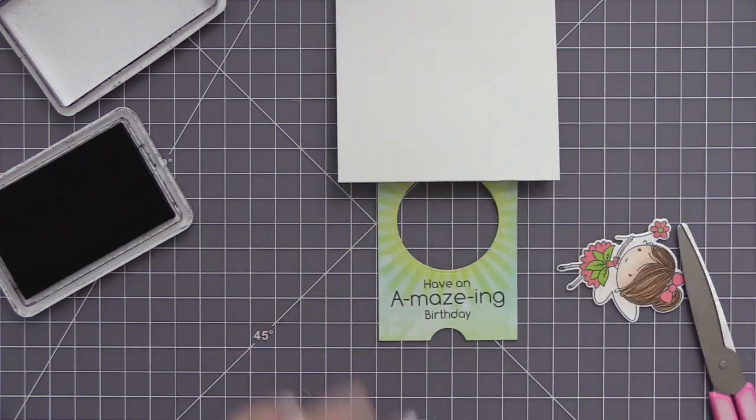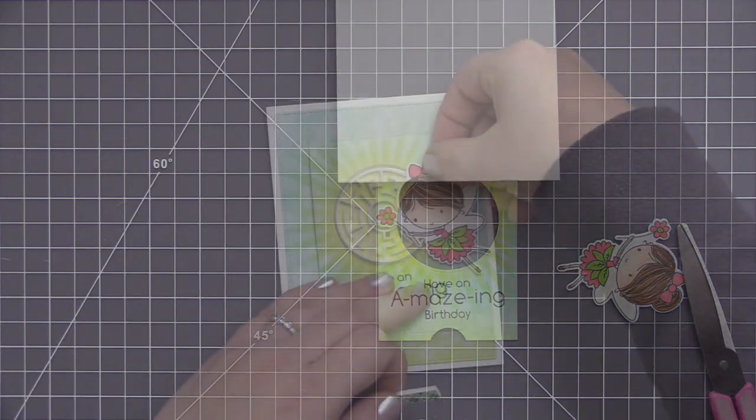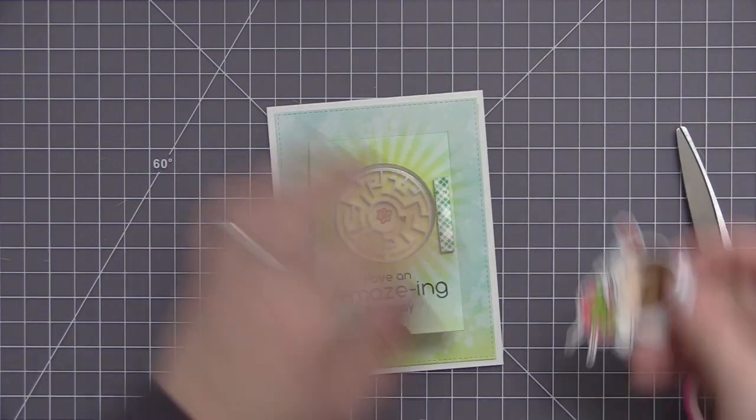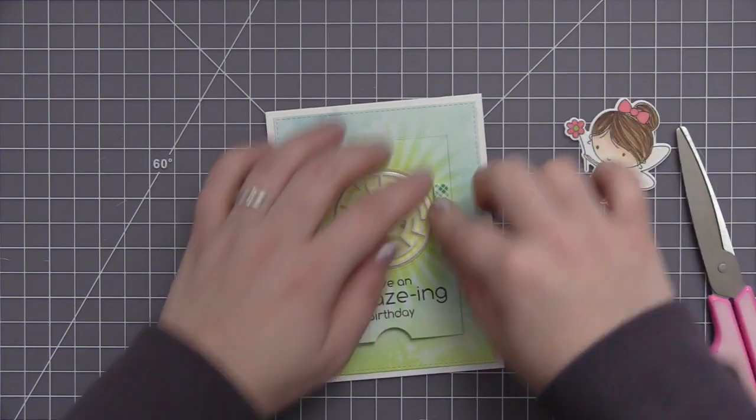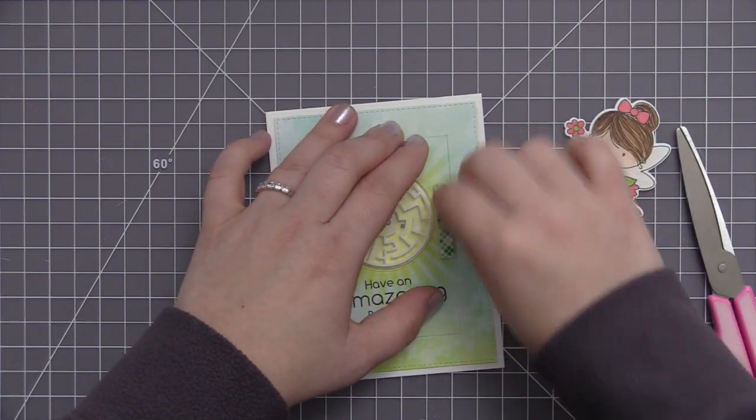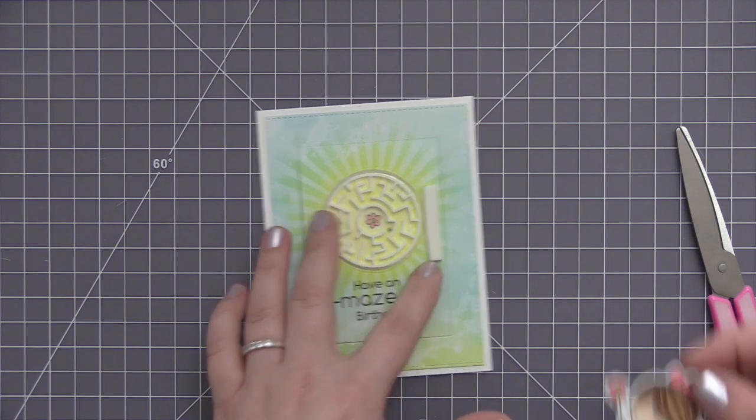Now you can leave it so that your maze doesn't come out, or you can use magnet tape, you could use repositionable adhesive. You can pretty much use anything on hand that will allow you to easily remove the maze game from the card. And then once you have that done, you just want to go ahead and finish adding everything on.